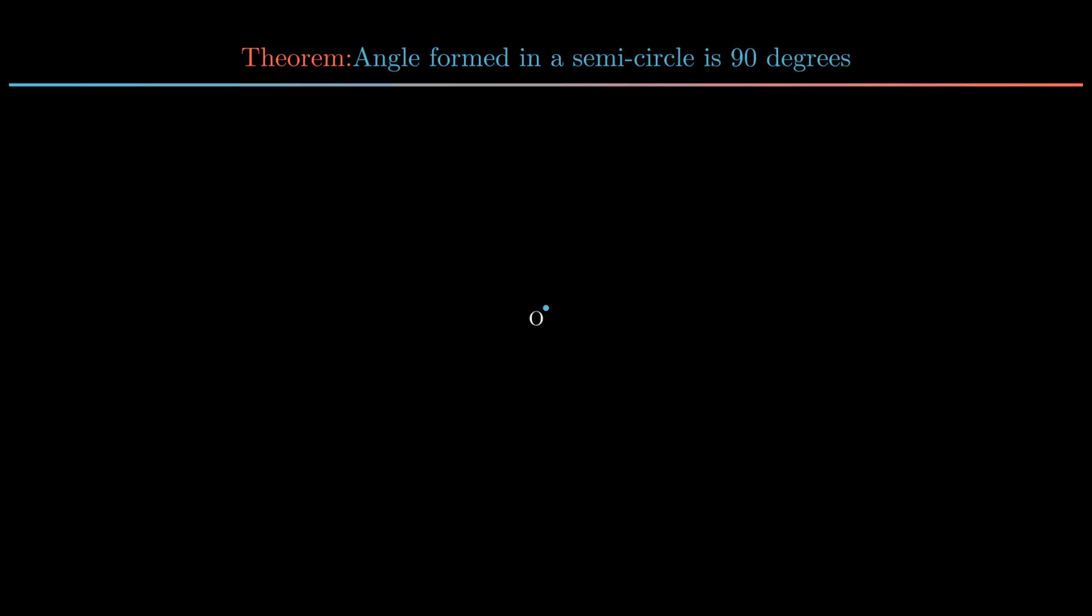Consider a circle with center O. Let A and B be the points on the circle such that AB acts as the diameter, resulting in the formation of two semicircles.